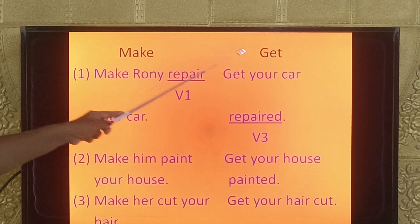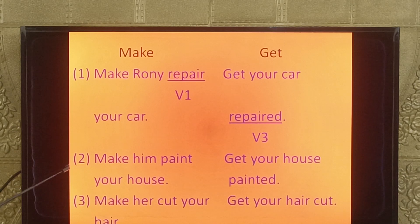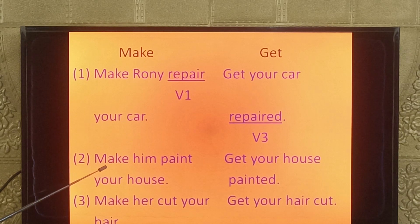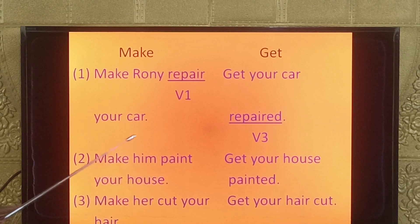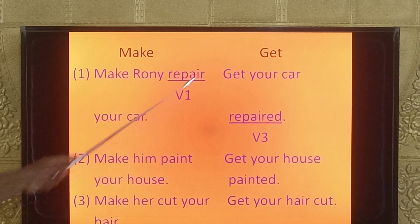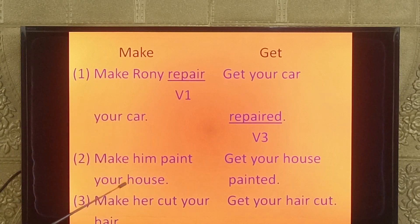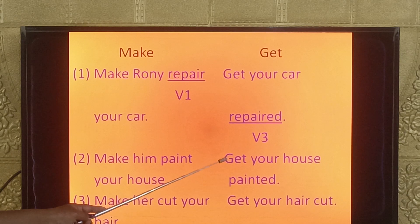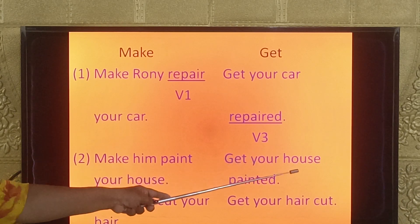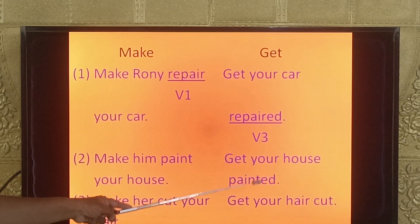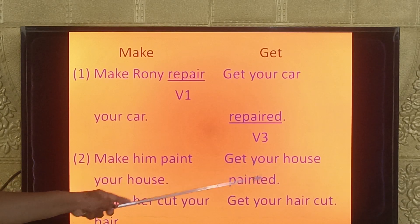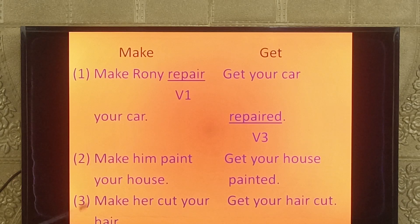Second example — with make: 'Make him paint your house.' After make, the pronoun 'him' is used, then 'paint' (V1 form), then 'your house' (object). With get: 'Get your house painted by an expert.' After get, the object 'your house' comes first, then the V3 form 'painted', followed by the doer.